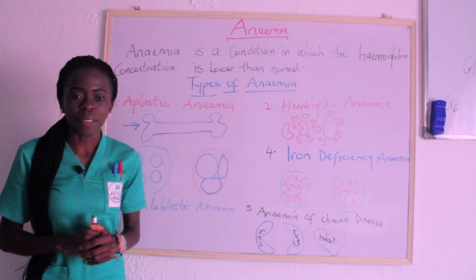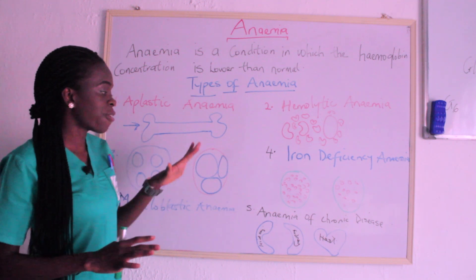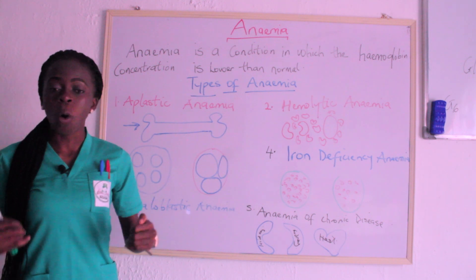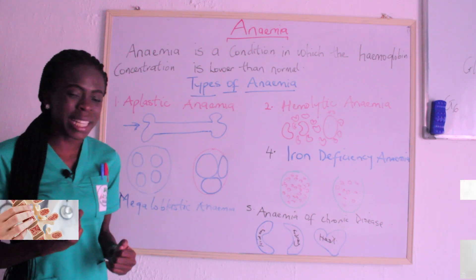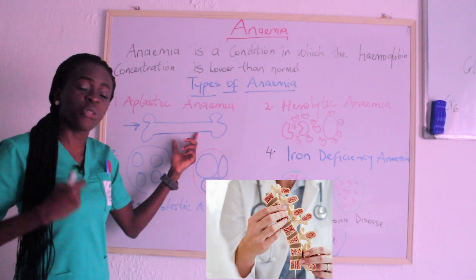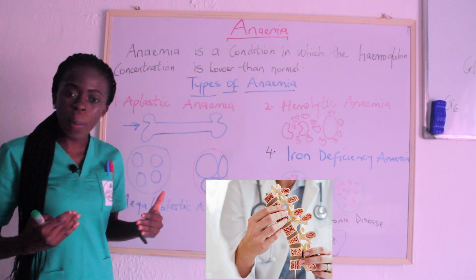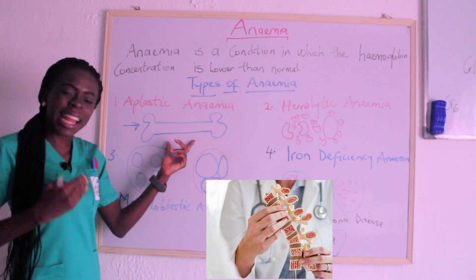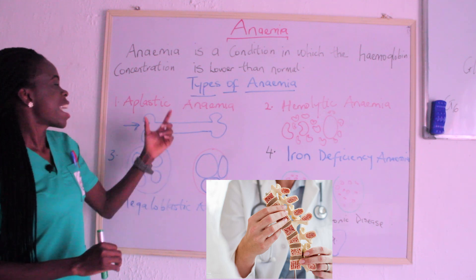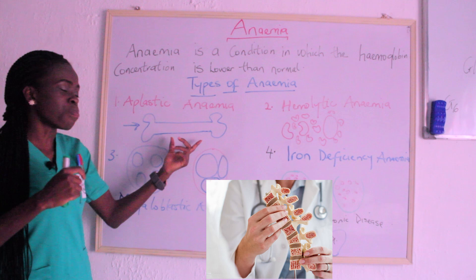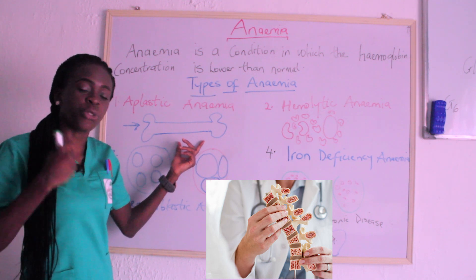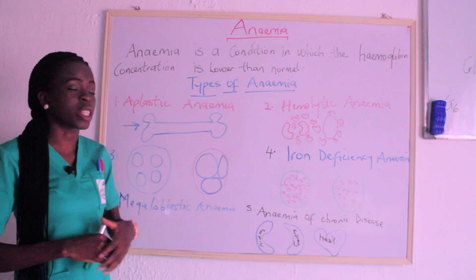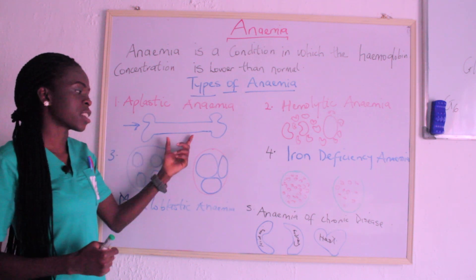There are various types of anemia, but we have five here on the board. The first is aplastic anemia. Aplastic anemia occurs when the bone marrow is unable to produce enough red blood cells — it is unable to keep up with the production of red blood cells. In aplastic anemia, what is affected is the bone marrow.